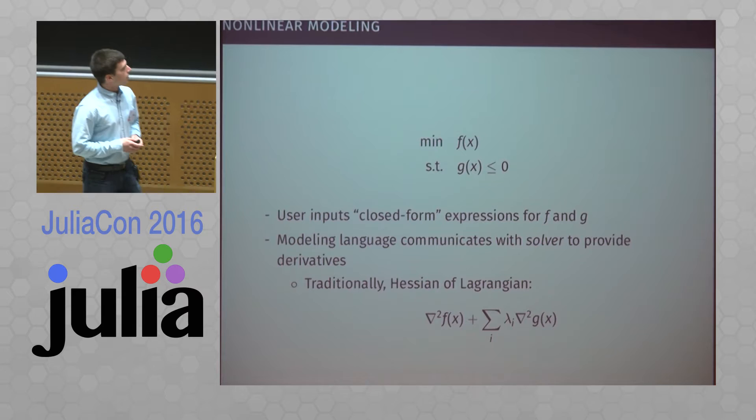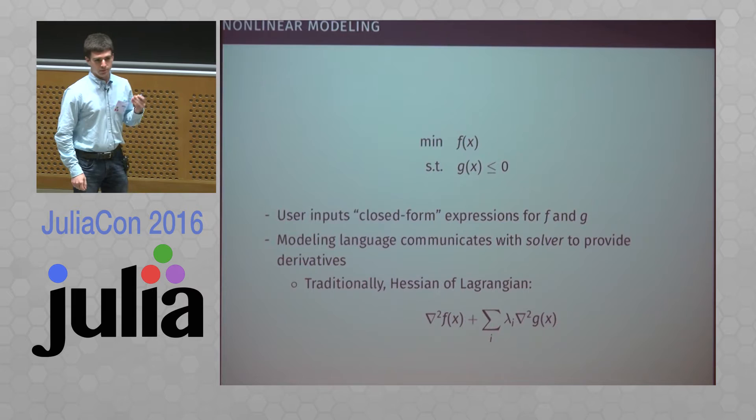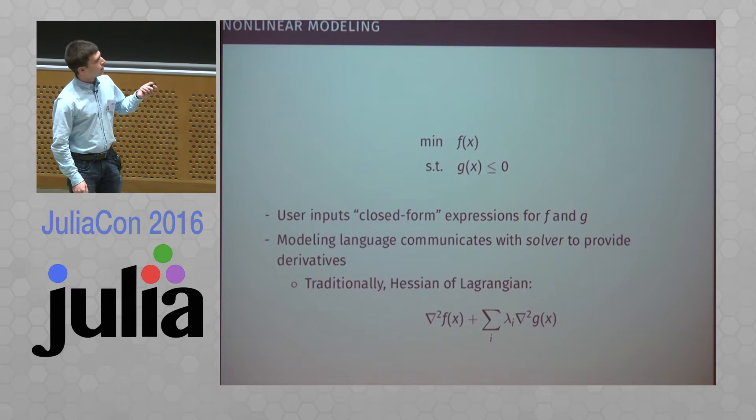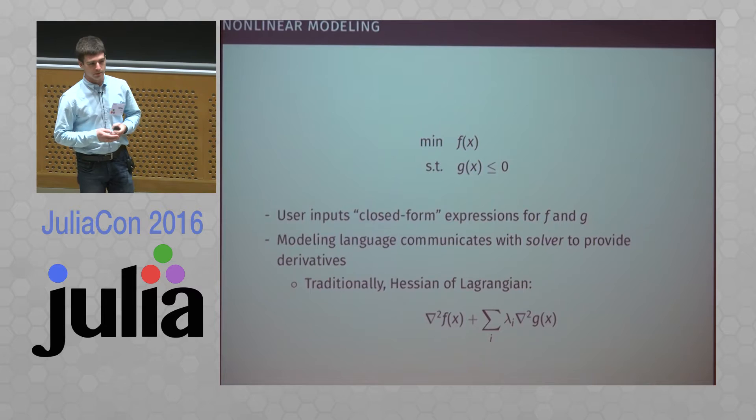What JuMP does — JuMP does not solve these problems. All it does is communicate with algorithms or solvers that do solve these problems. What we provide to these algorithms are the derivatives and gradients, Hessians, that these solvers need to solve these problems.